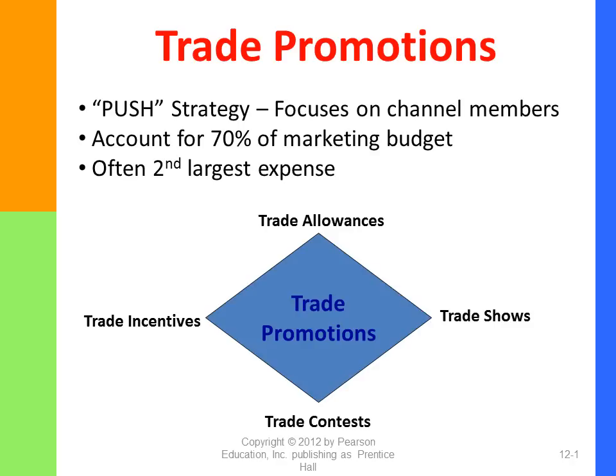We also have trade incentives and trade contests. Trade incentives are typically small cash bonuses, often called spiff money, that a brand will give to a retailer's sales force so that they pitch the brand over others. Trade contests are contests devised for retail salespeople to try to get them to sell the brand more. For example, a brand like Wrangler jeans might give away a Jeep Wrangler to the JC Penney salesperson who sells the most Wrangler jeans over a certain period of time. All of these trade promotions are designed to get your distribution channel pushing the brand strongly to the end consumer.